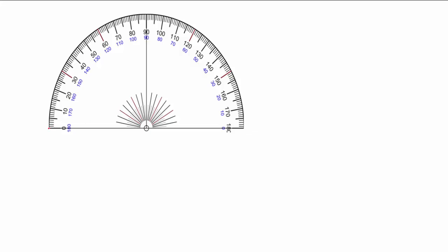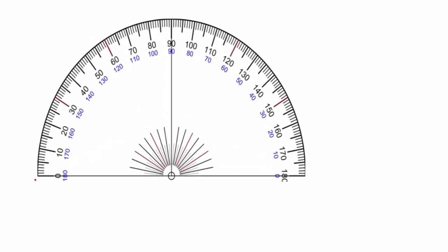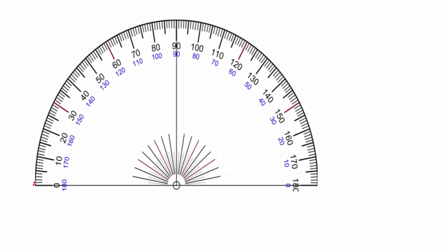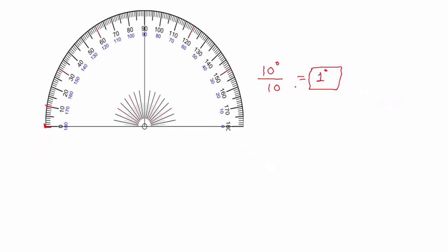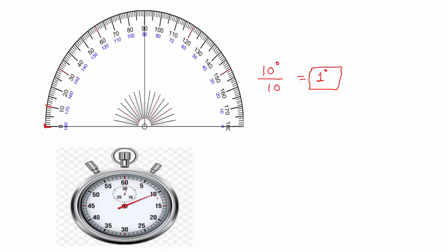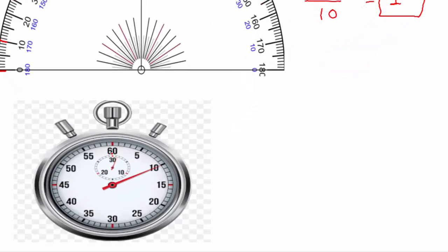Now let's find the least count of a protractor. Taking a bigger reading from 0 to 10 degrees, 10 degrees is divided into 10 divisions, so 10 divided by 10 equals 1 degree. So 1 degree is the least count of this protractor.